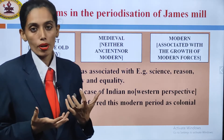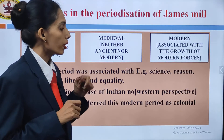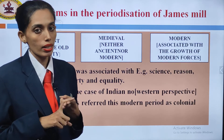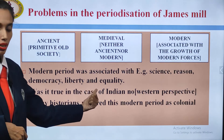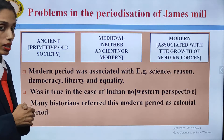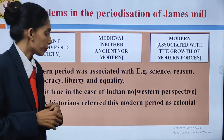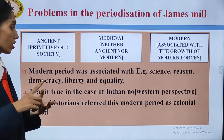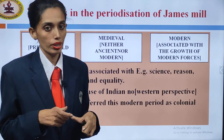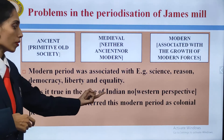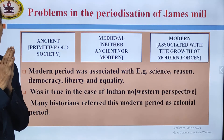We saw that there was a lot of progress. According to James Mill, when he mentioned about the modern period, he mentioned about the civilization that they had brought to India. Modern period was associated with science, reason, democracy, liberty and equality. Was it there from the early period? No. Was it true in the case of Indians? No — this is a Western perspective. All these ideas have been given as a Western perspective.